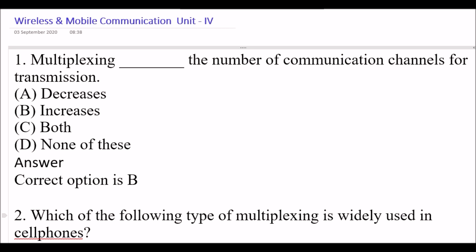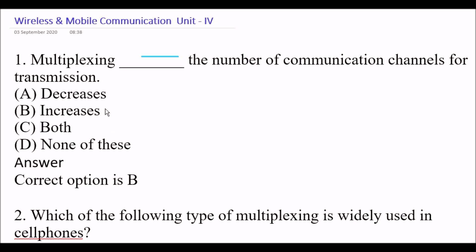Your first question is: Multiplexing blank space the number of communication channels for transmission. Option A: decreases. Option B: increases. Option C: both. Option D: none of these. The right answer is Option B, increases.